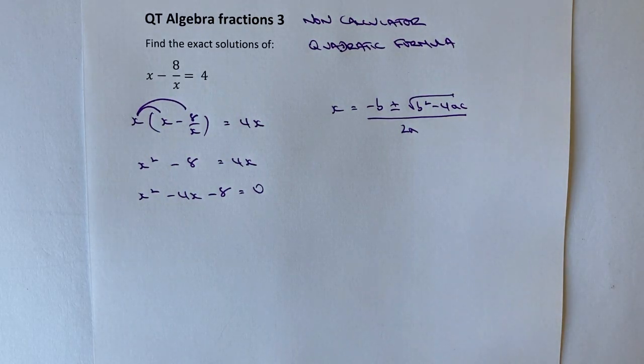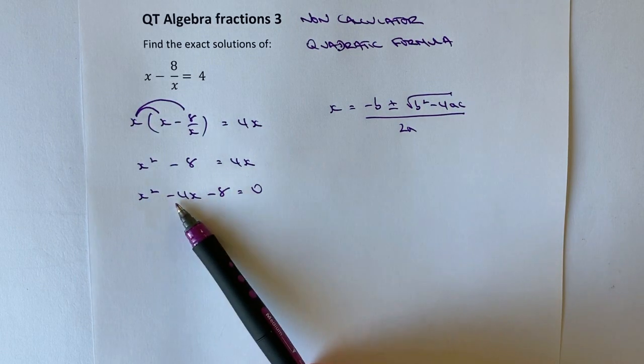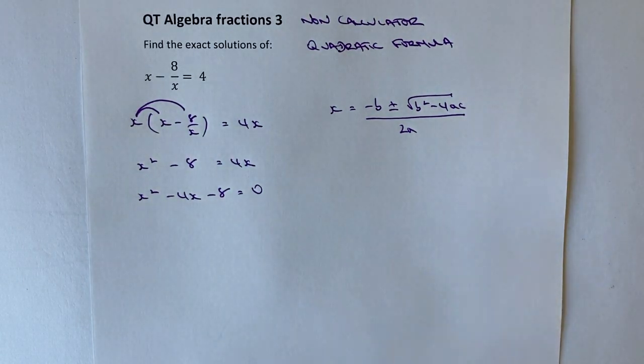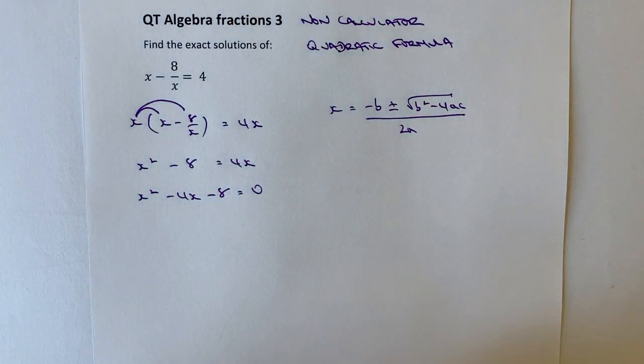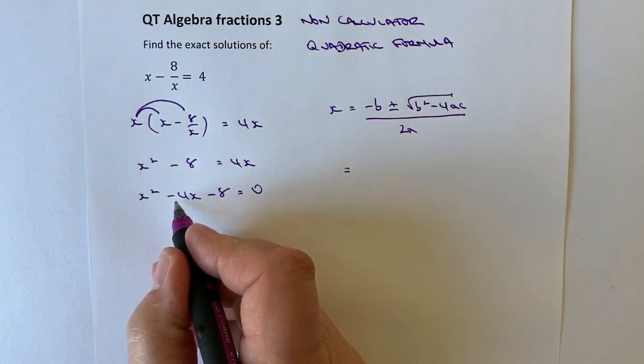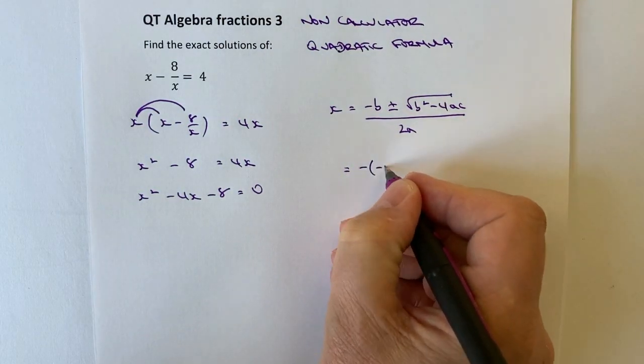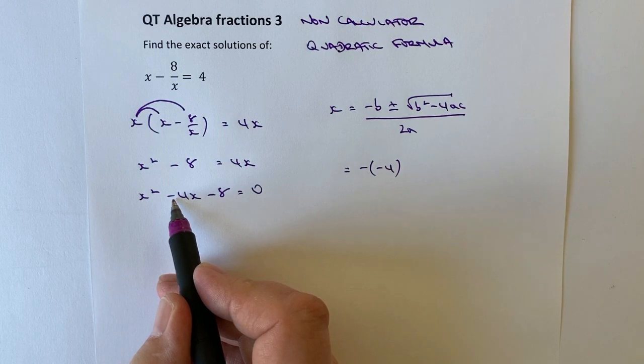So I've got my values of a, b, and c. a is going to be 1, b is going to be minus 4, and c is going to be minus 8. So I can actually plug that information directly into the formula. So minus b is minus minus 4. So I've got minus minus 4, remember b is going to be minus 4.